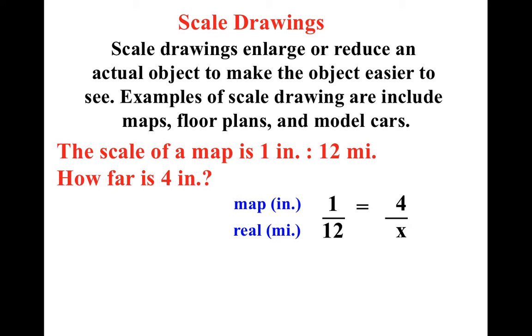Alright. Now that we have this, it's very easy to realize if we just cross multiply, we can find out that the number we're looking for is 48. 48 what? Miles. Why is it miles? Because the real world, or miles, was down here in the denominator. Could I solve it the other way by putting the miles up top and the inches down below? Yes. As long as it lined up appropriately so that one inch equaled twelve miles and four inches equaled, I don't know.